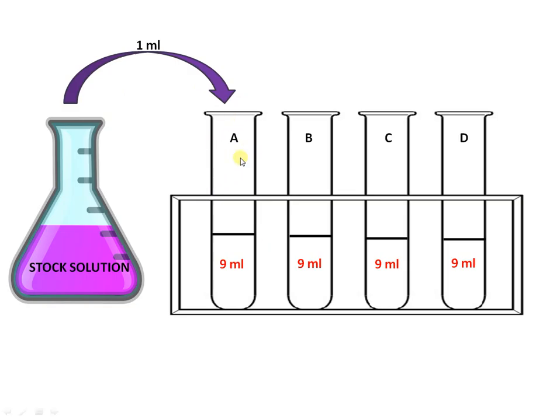Here we are diluting 1 ml of stock solution with 9 ml of distilled water, making 1 by 10 dilution, or 0.1 dilution, or 10 raised to minus 1 dilution. So now we have 10 raised to minus 1 dilution.